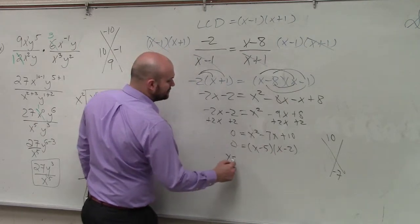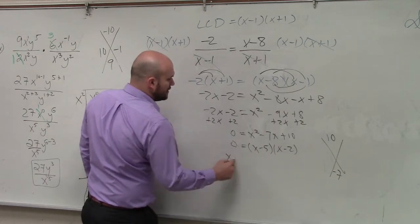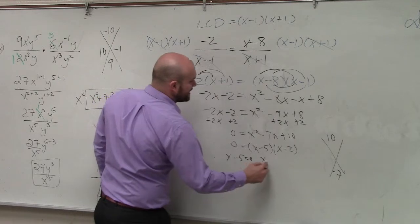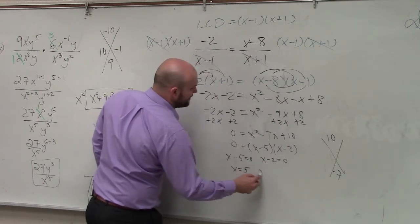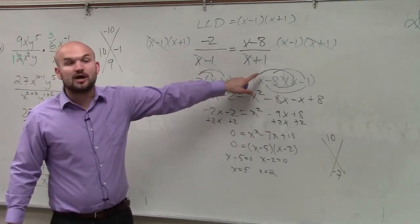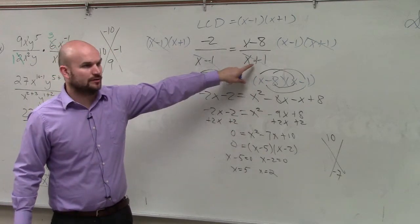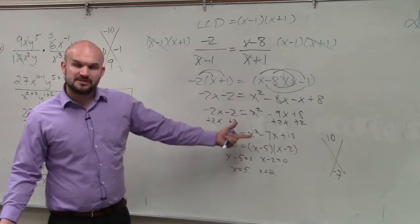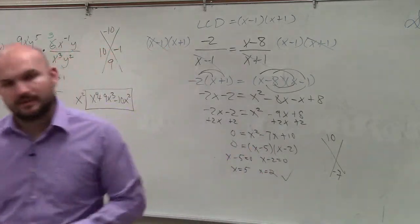Now you set those both equal to 0. x minus 5 equals 0, and x minus 2 equals 0. Therefore, x equals 5 and x equals 2. Again, go back up there. Our constraints are x cannot equal 1 or negative 1, correct? These two problems, they satisfy that, so those work, okay?